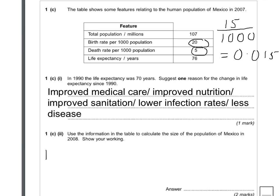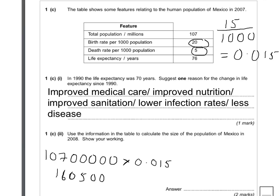If we multiply that by our population — so 107 million multiplied by 0.015 — that gets you an answer of 1,605,000. That's the amount of people the population has increased by; that's the net increase.